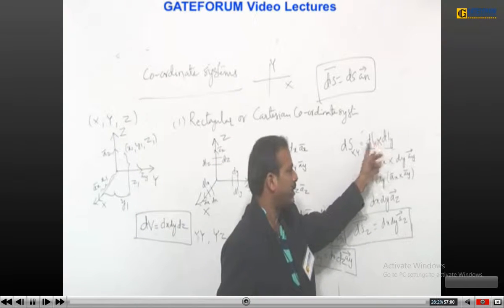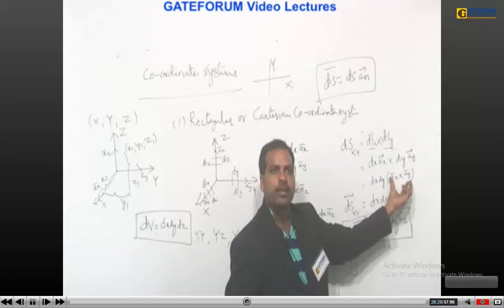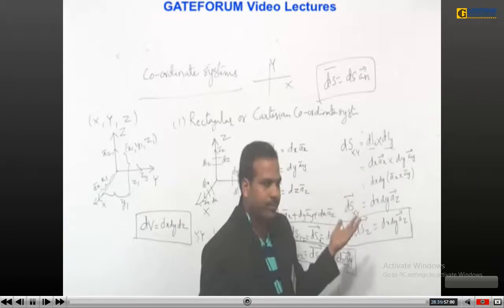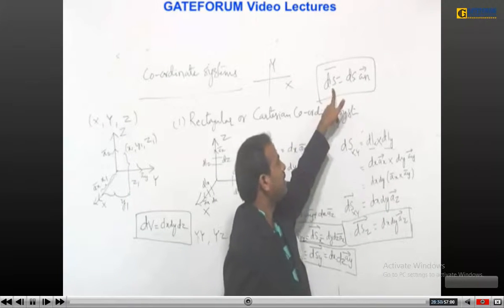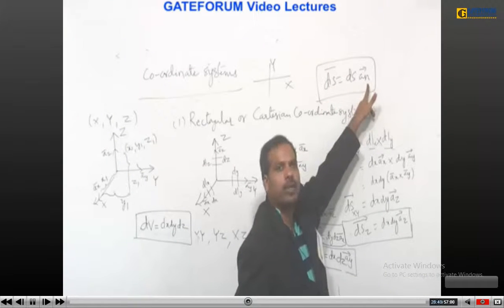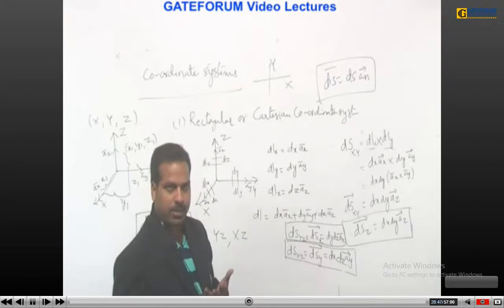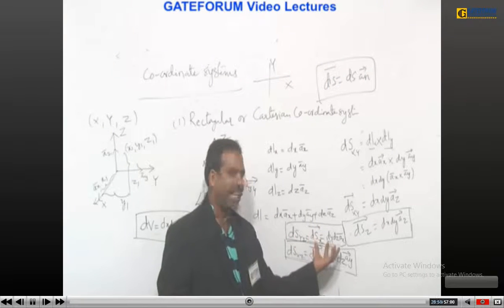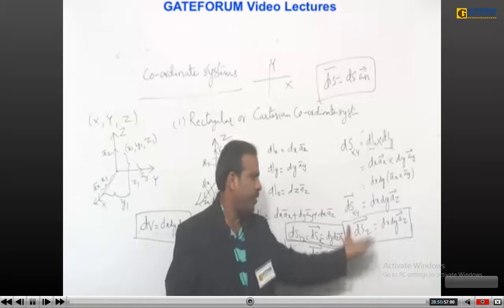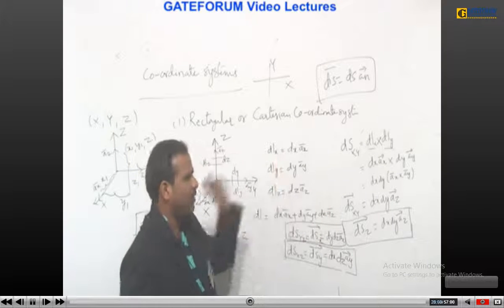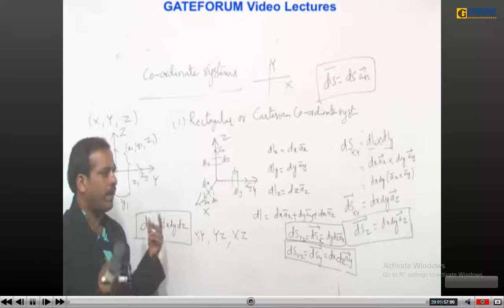Differential length elements along x, y, z are dx·āx, dy·āy, and dz·āz. A differential surface is always made up of two sides. For the surface along the xy direction, it is the product of differential length elements along x and y. Since these are vector terms, the product must be a cross product — a dot product would give zero. So as per the cross product convention, the differential surface equals the surface area times the unit normal to that surface.